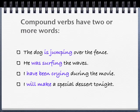The dog is jumping over the fence. Is and jumping work together to form the verb in that sentence. He was surfing the waves. I have been crying during the movie. I will make a special dessert tonight.